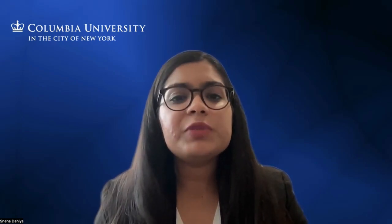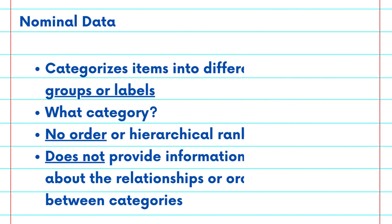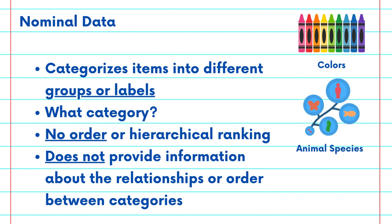The distinction between nominal and ordinal data is essential to understand how we categorize and order information. Let's start with nominal data. Nominal data simply categorizes items into different groups or labels — it's all about what category something belongs to. Think of colors, animal species, or types of fruits. These categories have no inherent order or hierarchical ranking; they are just labels.